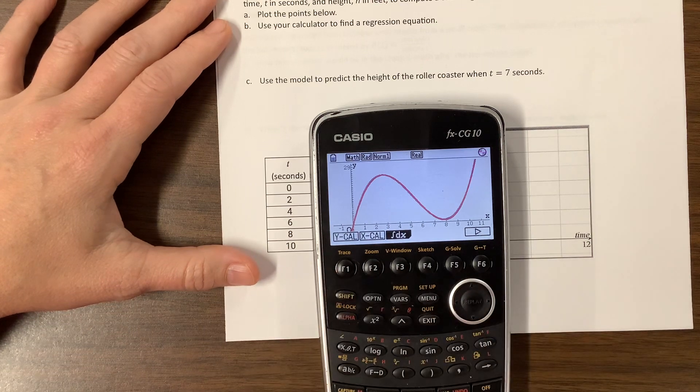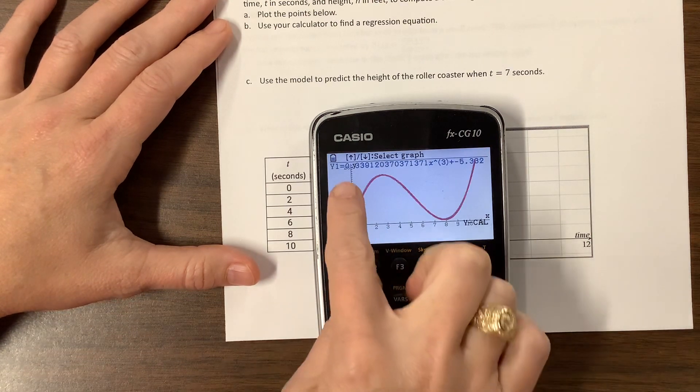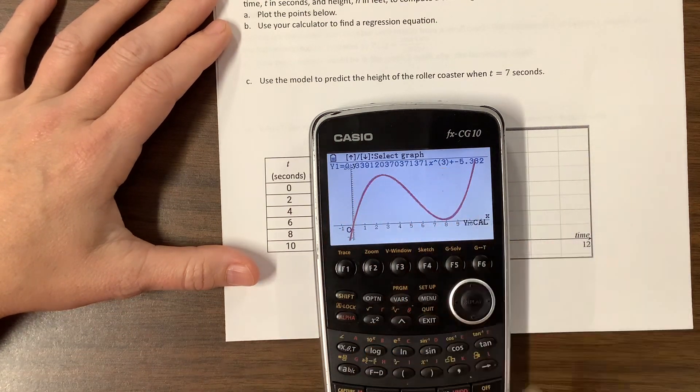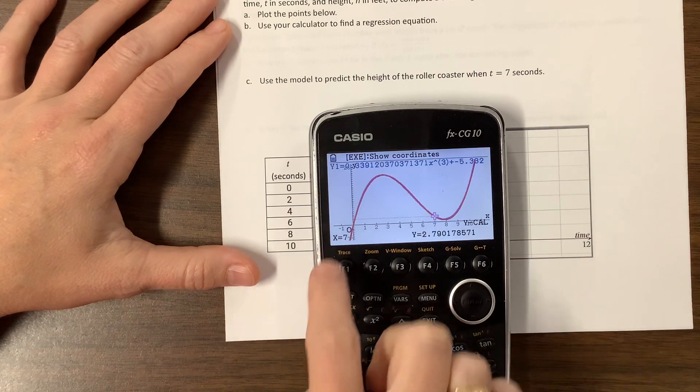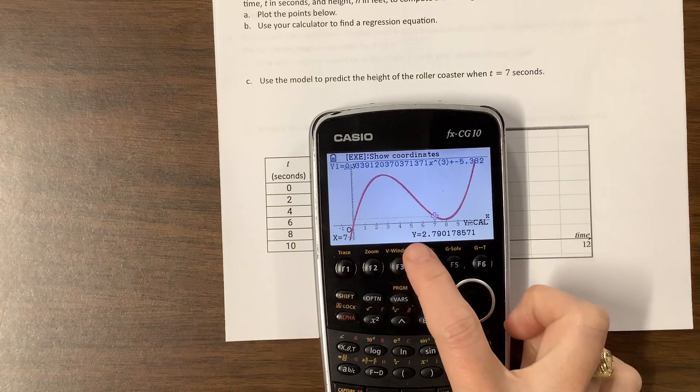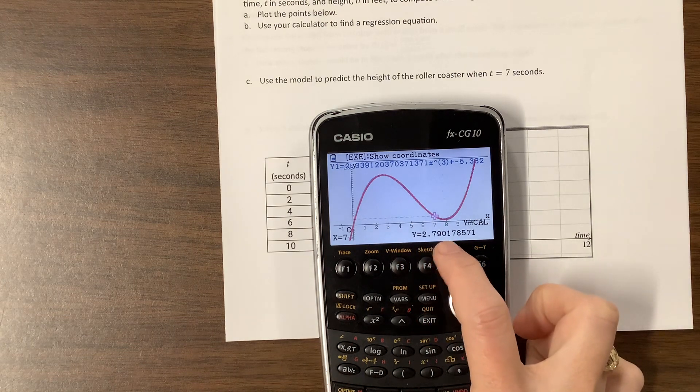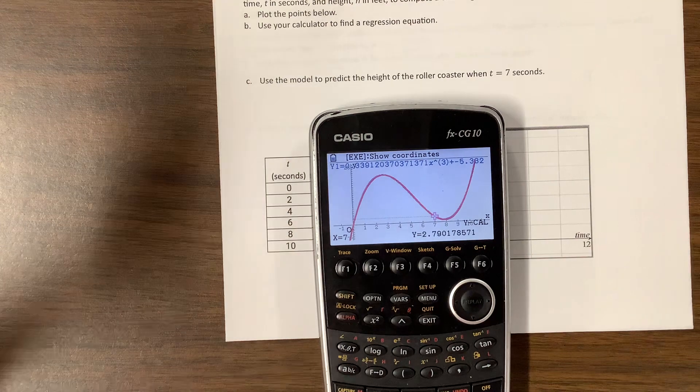I would come over to Y-cal. And I think this one, it's using the cubic equation first. And so I'm going to plug in 7. And from the cubic equation, I get that you're about 2.7902 feet high. Anyway, I can also come back.